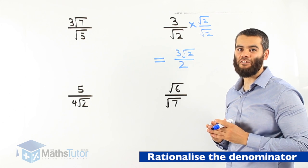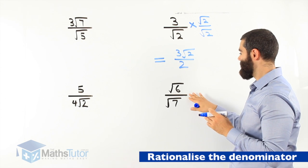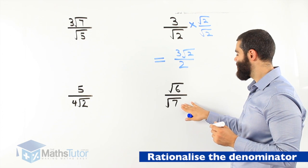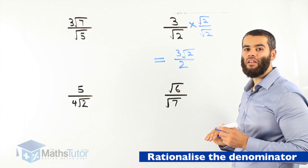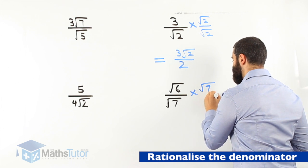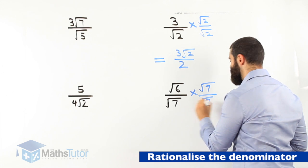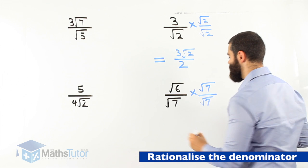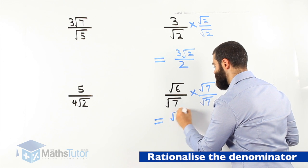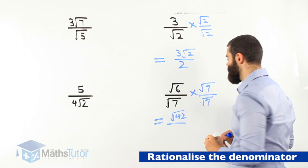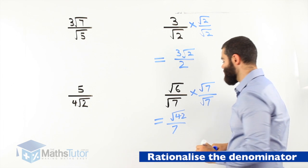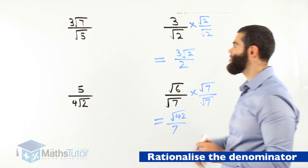Let's do the next one: root 6 divided by root 7. Again the denominator is a surd; we want to make it into a rational number. We multiply by the actual denominator — root 7 over root 7. Root 6 times root 7 is root 42, and root 7 times root 7 is simply 7. We have rationalized the denominator.